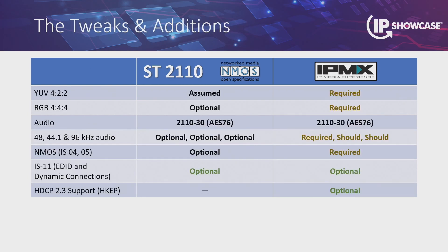These are more tweaks and additions. In the SMPTE-2110 world, you kind of assume YUV 4:2:2 is going to be the norm. In IPMX, that's required — you have to support it — and you also have to support RGB 4:4:4. In IPMX we require support for 4:4:4 because people are going to expect that, and frankly it's the minimum for HDMI. HDMI requires support for 640×480 RGB 4:4:4 as a minimum.